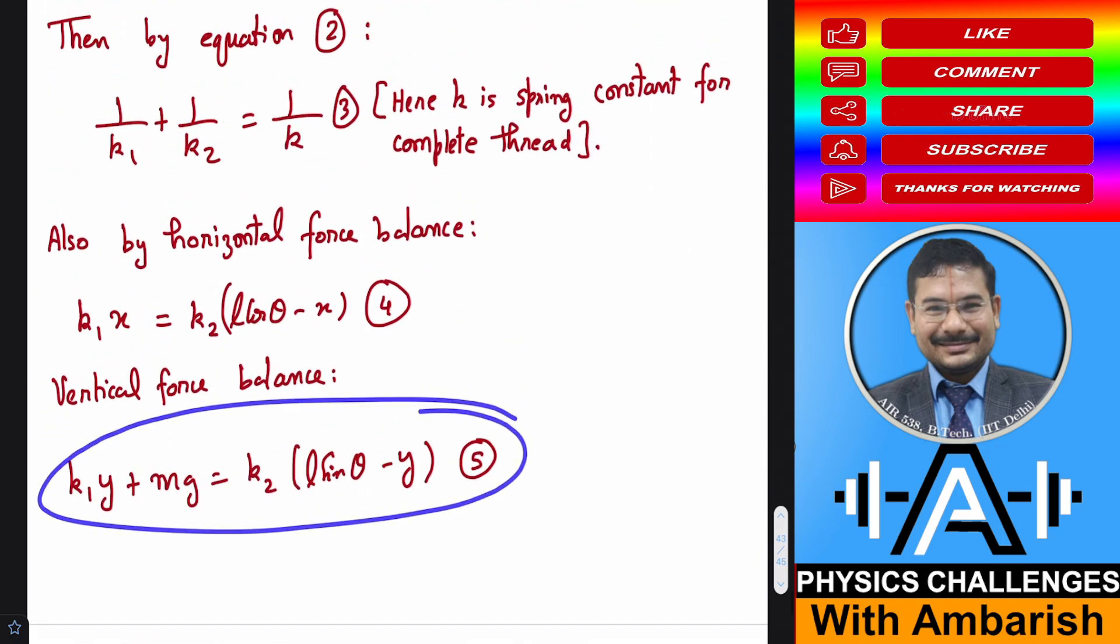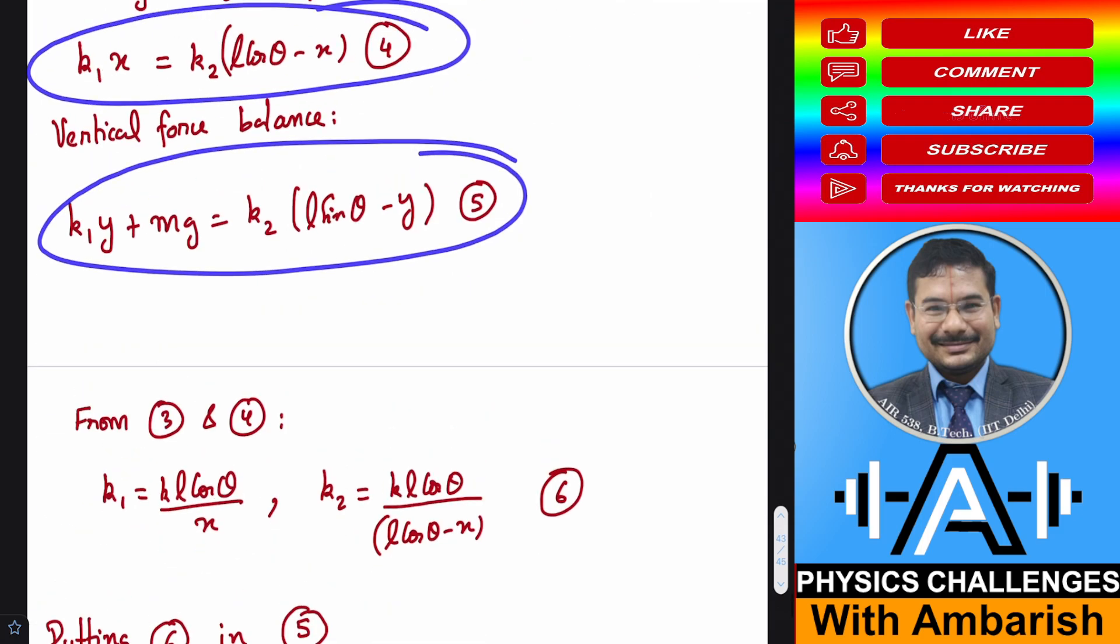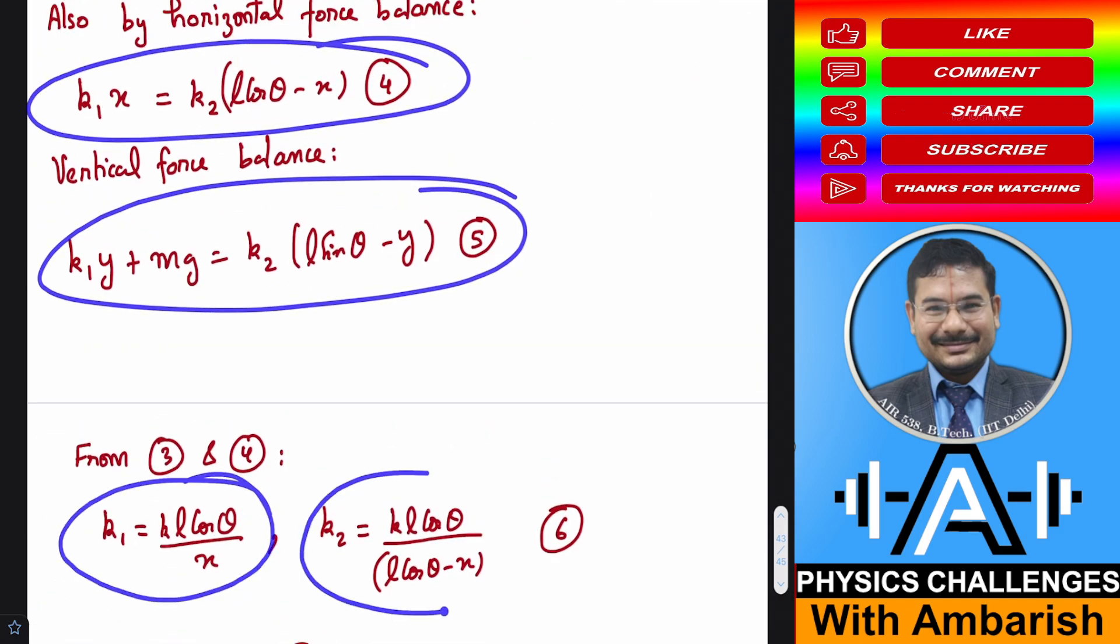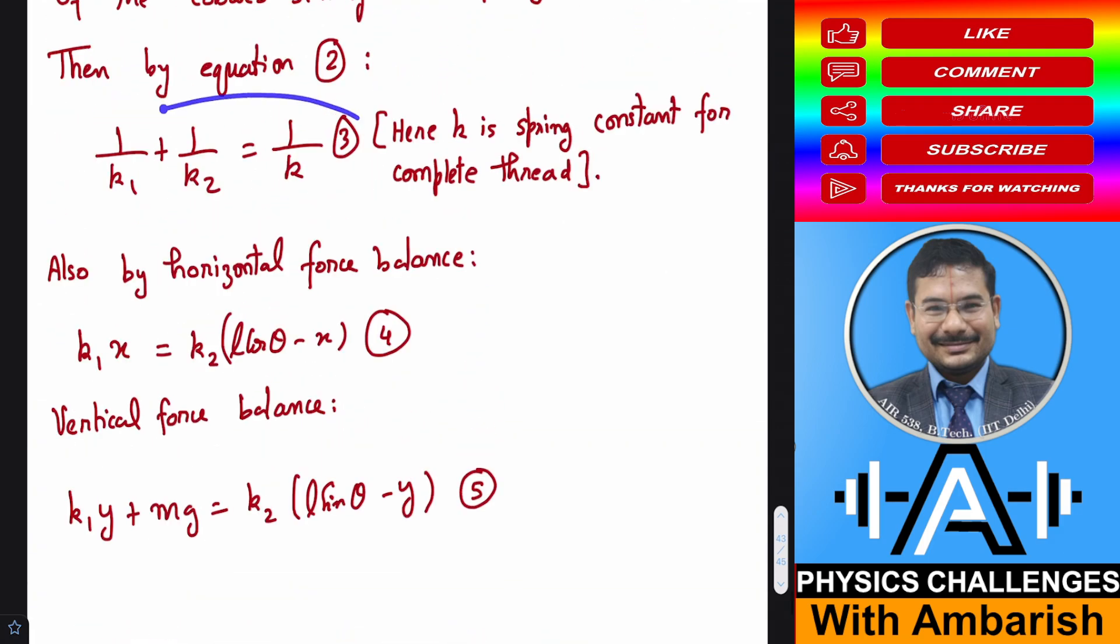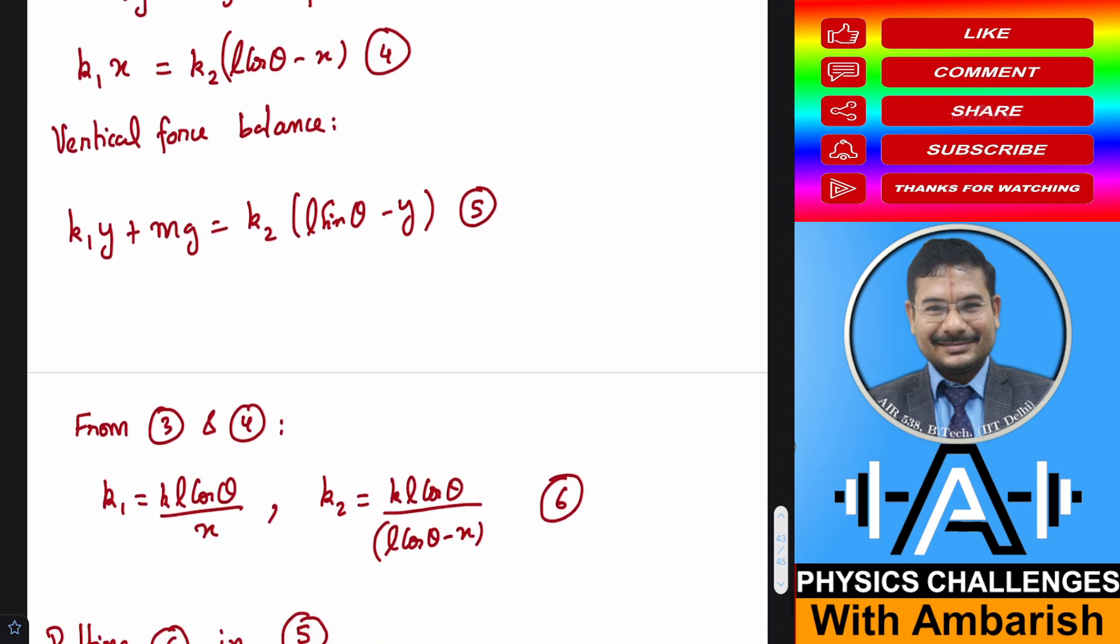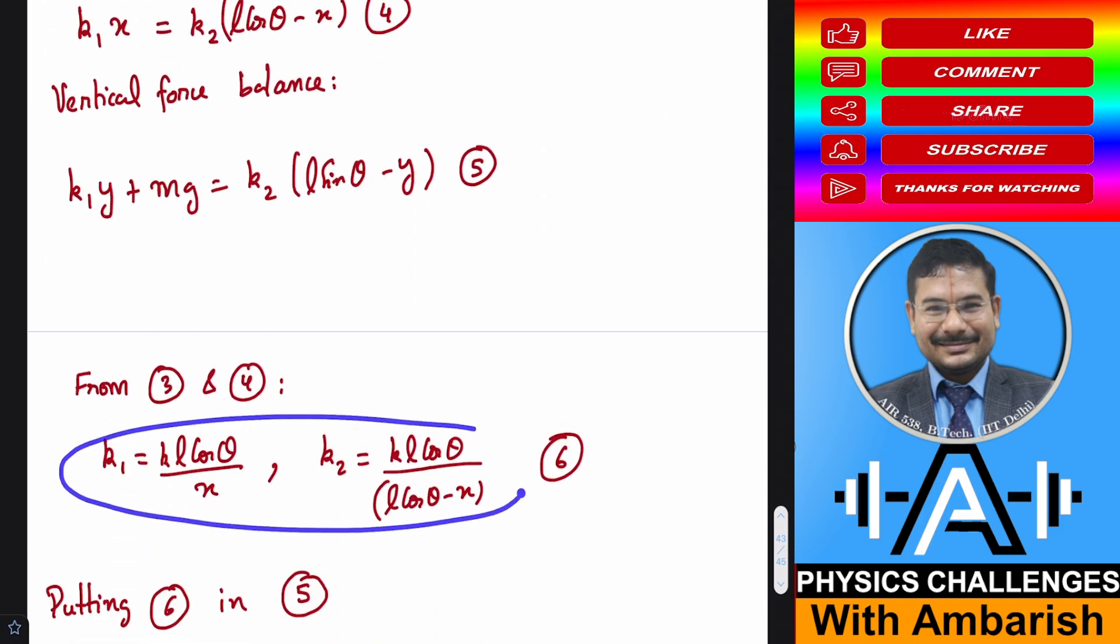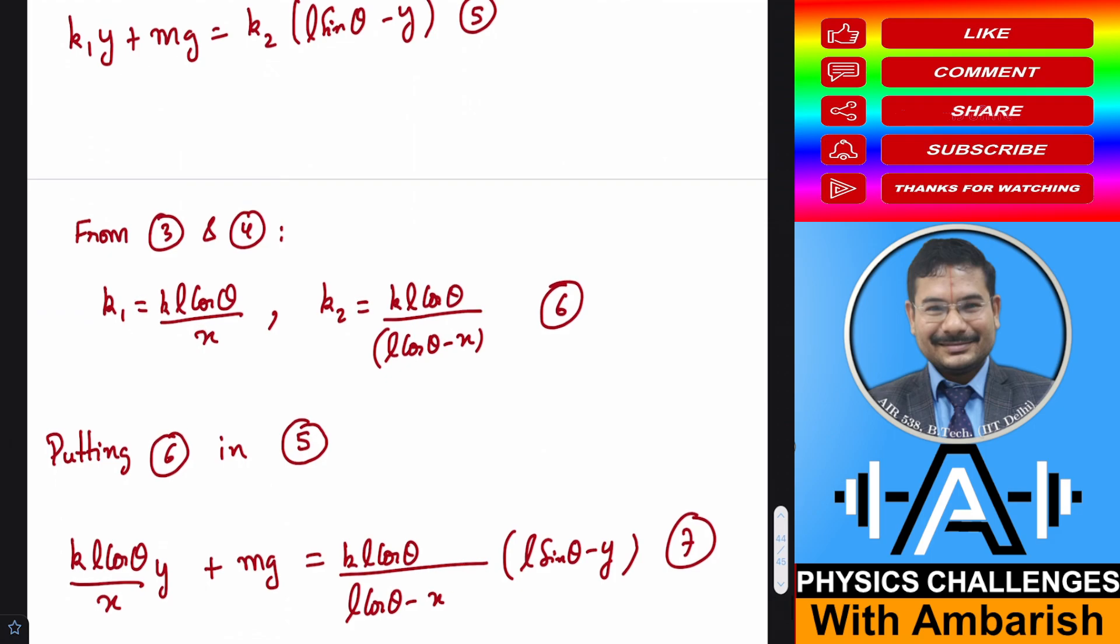Now from equations 3 and 4, I can get this relation. K1 is KL cos theta upon X and K2 equals KL cos theta upon L cos theta minus X. You can simply eliminate the other things and it's not a very difficult elimination, so you will be able to easily get this one. K1 and K2 are expressed in terms of K, theta, and X.